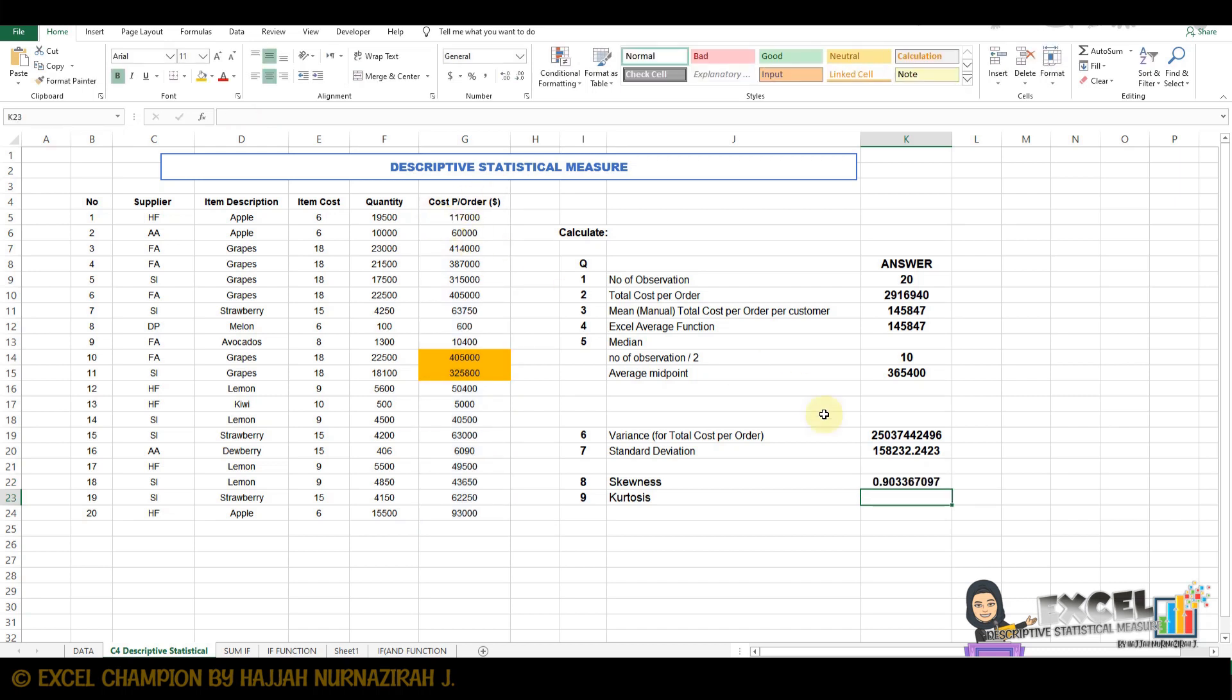Enter. The value is 0.903367097. According to the coefficient of skewness, the answer refers to a moderate coefficient of skewness.